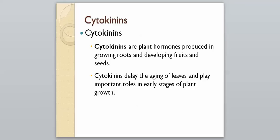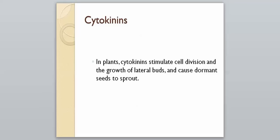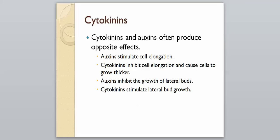Cytokinins are plant hormones that are produced in growing roots and developing fruits and seeds. Their function is to delay the aging of leaves and they play important roles in the early stages of plant growth. Cytokinins stimulate cell division and the growth of lateral buds, and they will cause dormant seeds to sprout. They are responsible for bringing plants out of their dormancy — almost like coming out of hibernation.